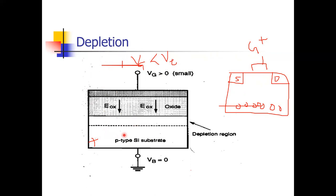In the P-type substrate, all majority carriers are holes with positive charge. We are giving positive voltage at the gate. Positive and positive repel, so all holes come down. This particular region below the oxide layer is depleted of the holes — free of holes. This particular region is called the depletion region.